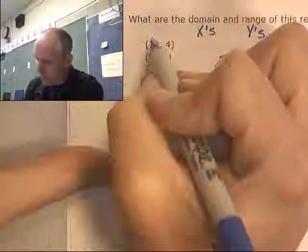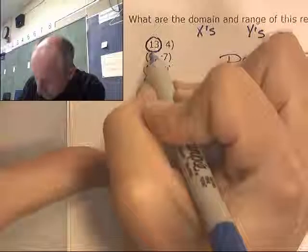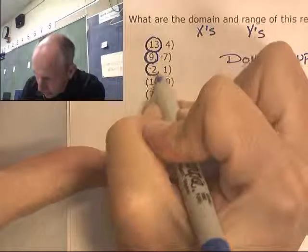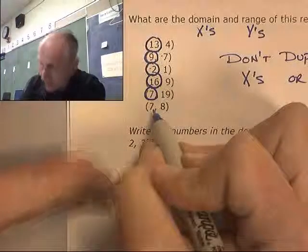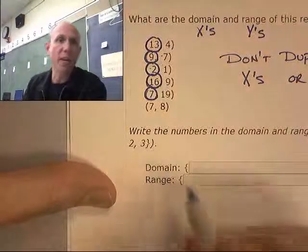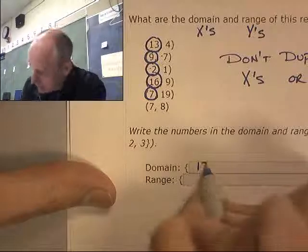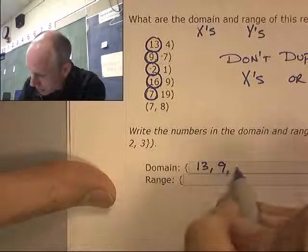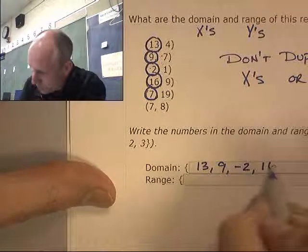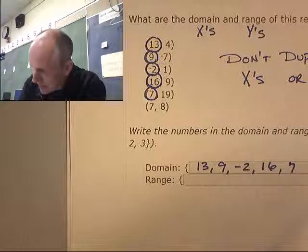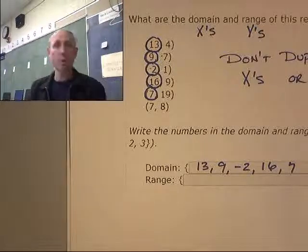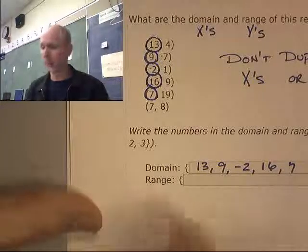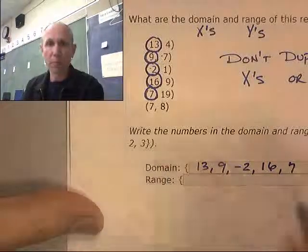Let's take a look at this. So my domain, these are my X's. And right here, these are all my X's, right? X's, X's, X's, X's, X's, X's. Now notice the 7 is duplicated. I'm not going to write them twice. But here's my domain: 13, 9, negative 2, 16, 7. That's my domain. Those are my Ins. These are the numbers that I can put into this thing. And I didn't duplicate 7.